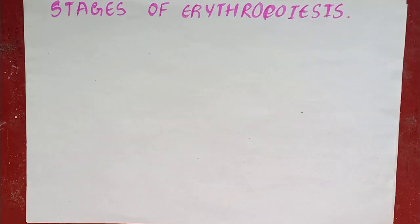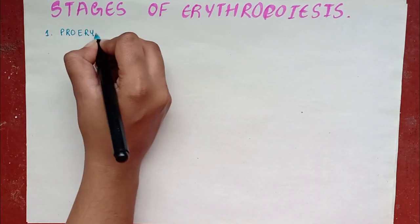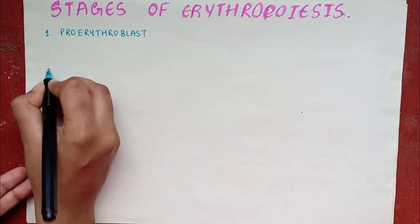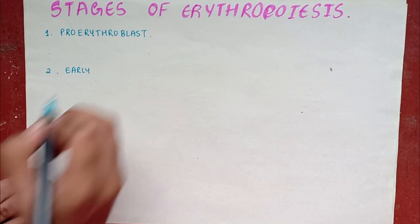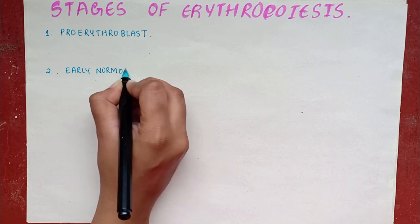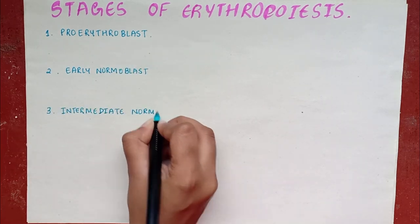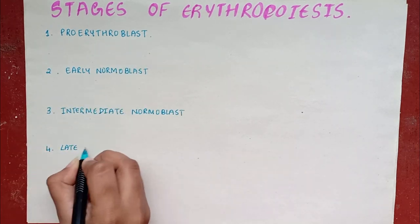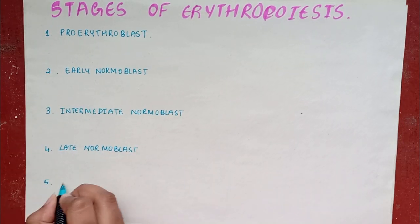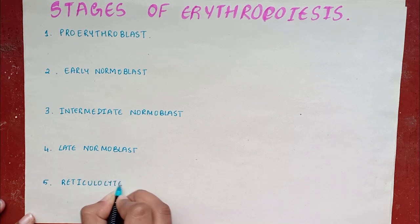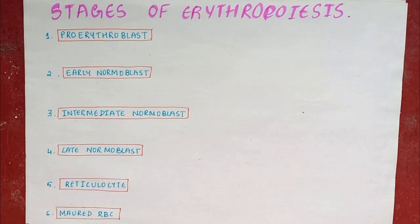Stages of Erythropoiesis. The various stages are: pro-erythroblast, early normoblast, intermediate normoblast, late normoblast, reticulocyte, and matured erythrocyte.